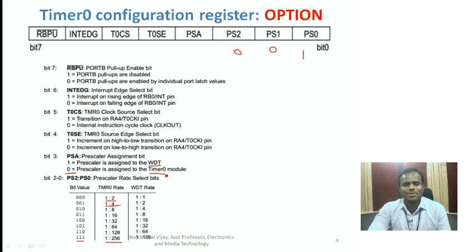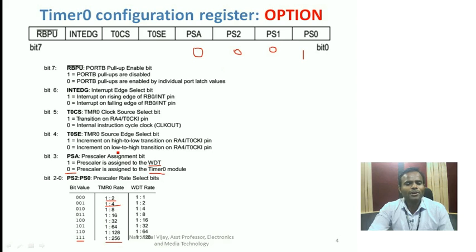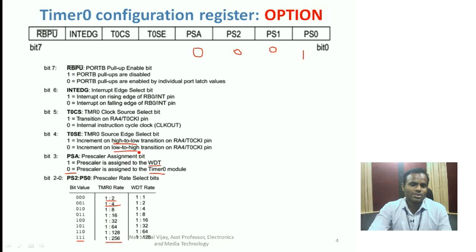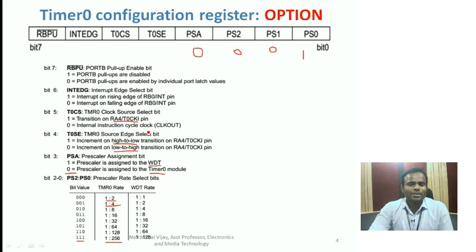The Timer 0 Source Select bit determines whether you want to count on a high-to-low or low-to-high transition. When set, it counts from high to low; when cleared, it counts from low to high. The T0CS (Timer 0 Clock Source Select) bit determines whether Timer 0 acts as a timer or counter: when set, it counts with the internal clock frequency acting as a timer; when cleared, it acts as a counter. These bits are very important as far as Timer 0 configuration is concerned.